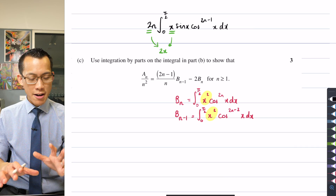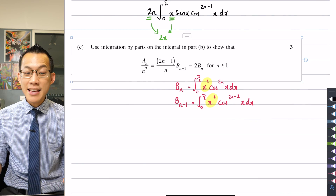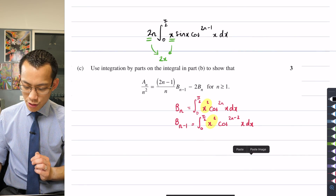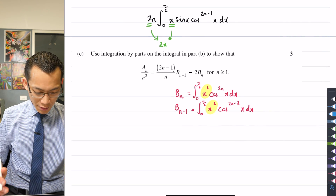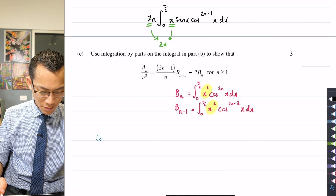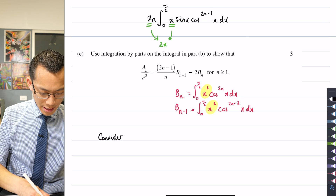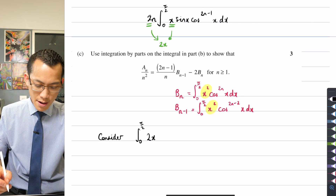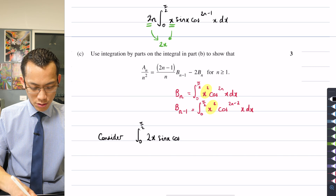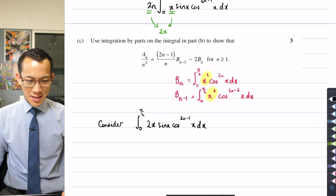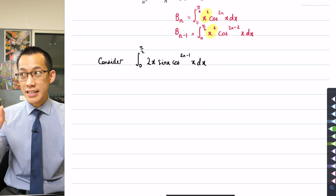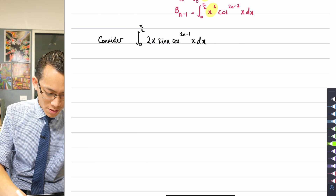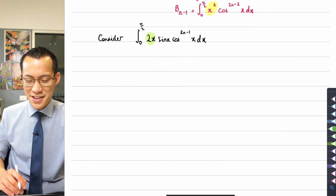So I can write my integral in such a way that I make 2x my dv/dx, and then I can work out what my u and du are. I'm going to consider the integral from 0 to π/2, popping that 2 into the integrand so it goes with x, and then the rest is sin(x) cos^(2N-1)(x) dx. So: dv/dx = 2x, which means v = x². Then u = sin(x) cos^(2N-1)(x), and I'll leave the u and du for a minute.